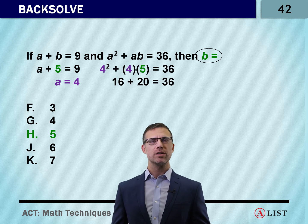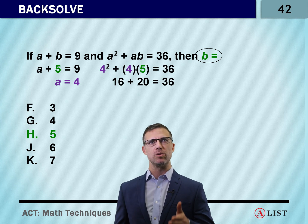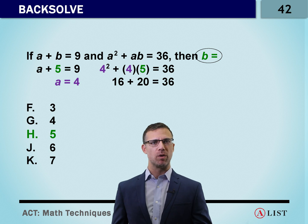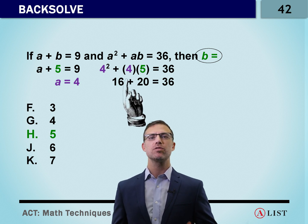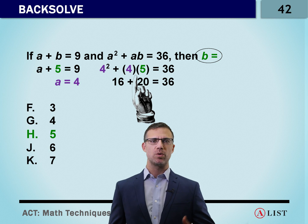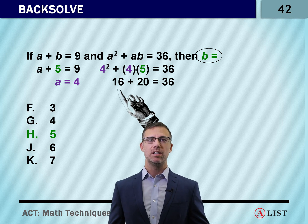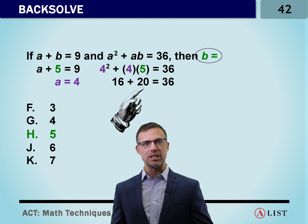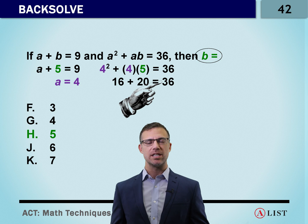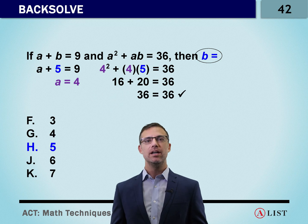We put A as four into the second equation. A squared plus A times B: we've got four for A and five for B. So we've got four squared plus four times five. What's four squared? 16. What's four times five? 20. What's 16 plus 20? It's 36. Is that what we were looking for? Yes. And so we're done.